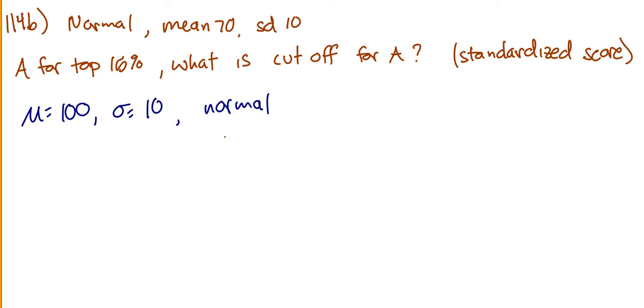In part A, you take all the students' exam scores and you standardize them all. Part B, someone had a question on part B. Part B says if a grading policy is only to give As for the top 15%, what would be the cutoff for an A? And it says in terms of a standardized score, which means find Z.